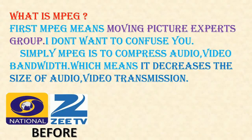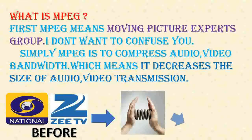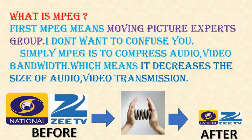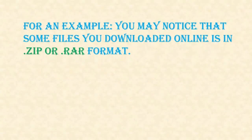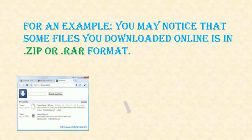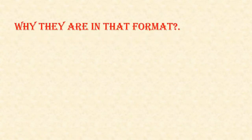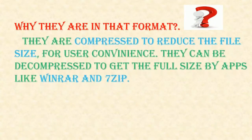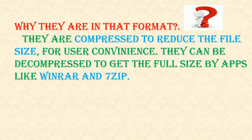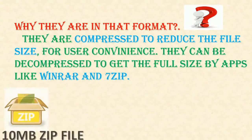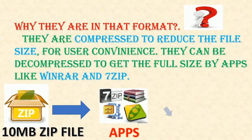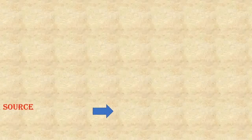Below you can see the size of the channels are compressed. For example, you may notice that some files you downloaded online are in .zip or .rar format. They are compressed to reduce the file size for user convenience. They can be decompressed to get the full size by apps like WinRAR and 7-Zip.